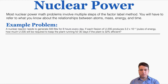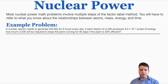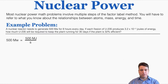Most nuclear power math involves multiple steps of the factor label method. You'll need to understand the relationships between atoms, mass, energy, and time. Example problem: a nuclear reactor needs to generate 500 megawatts for 8 hours every day. Each fission of U-235 produces 3.2 times 10 to the negative 11th joules of energy. How much U-235 is required to keep the plant running for 30 days if the plant is 32% efficient? Starting with what we know: 500 megawatts equals 500 megajoules per second, which equals 5 times 10 to the 8th joules per second.